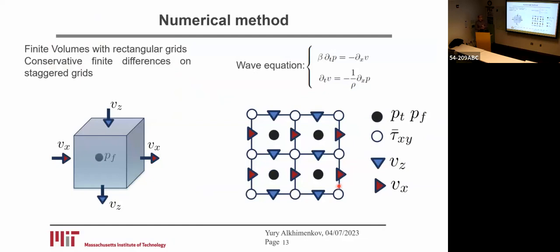I use quite a simple numerical method — we can call it finite volumes with rectangular grids, or conservative finite differences. The pressure and stress field position is in the center of our basic volume.